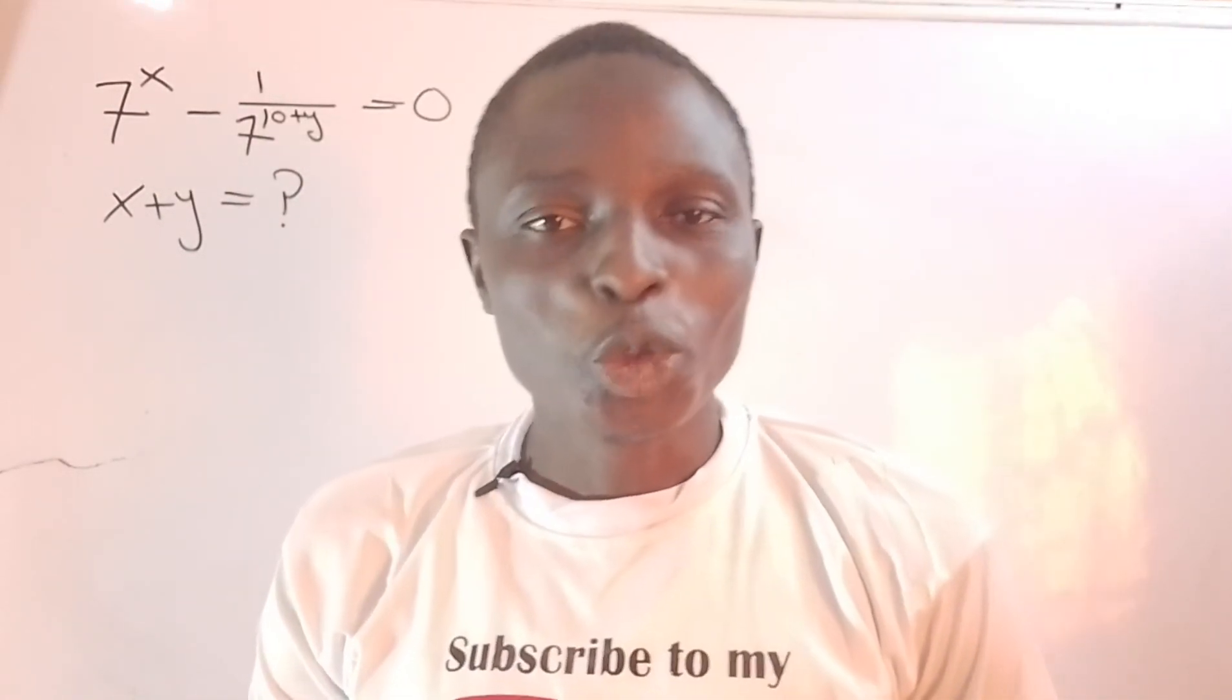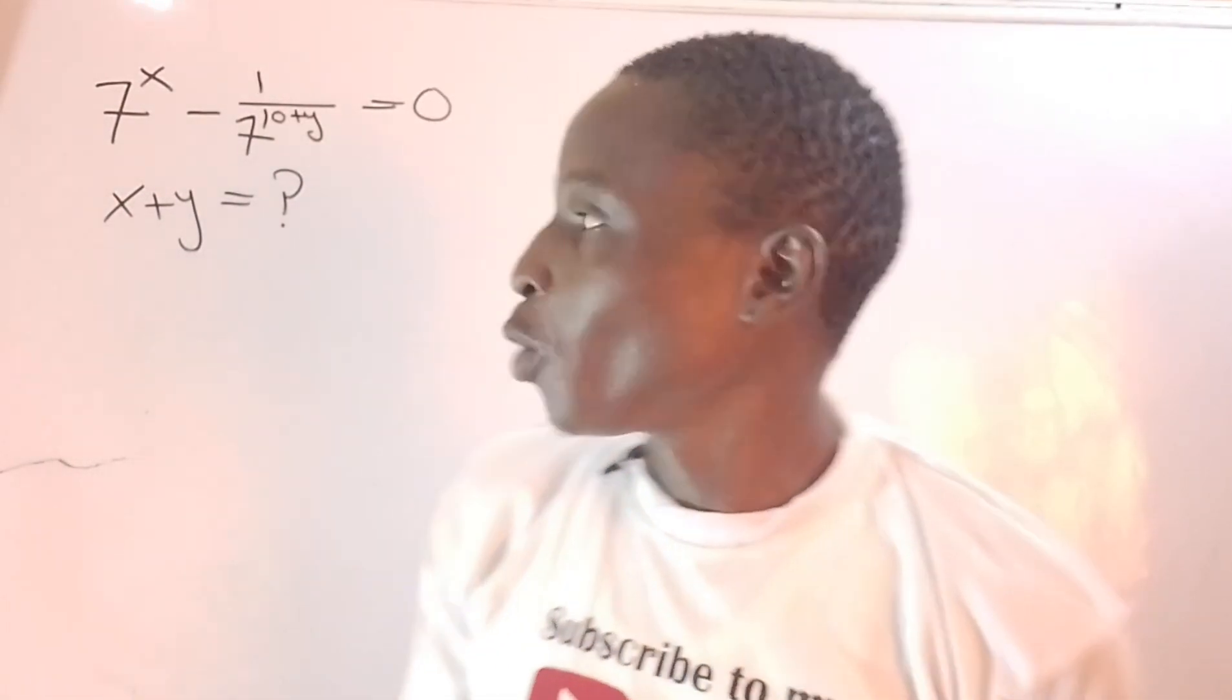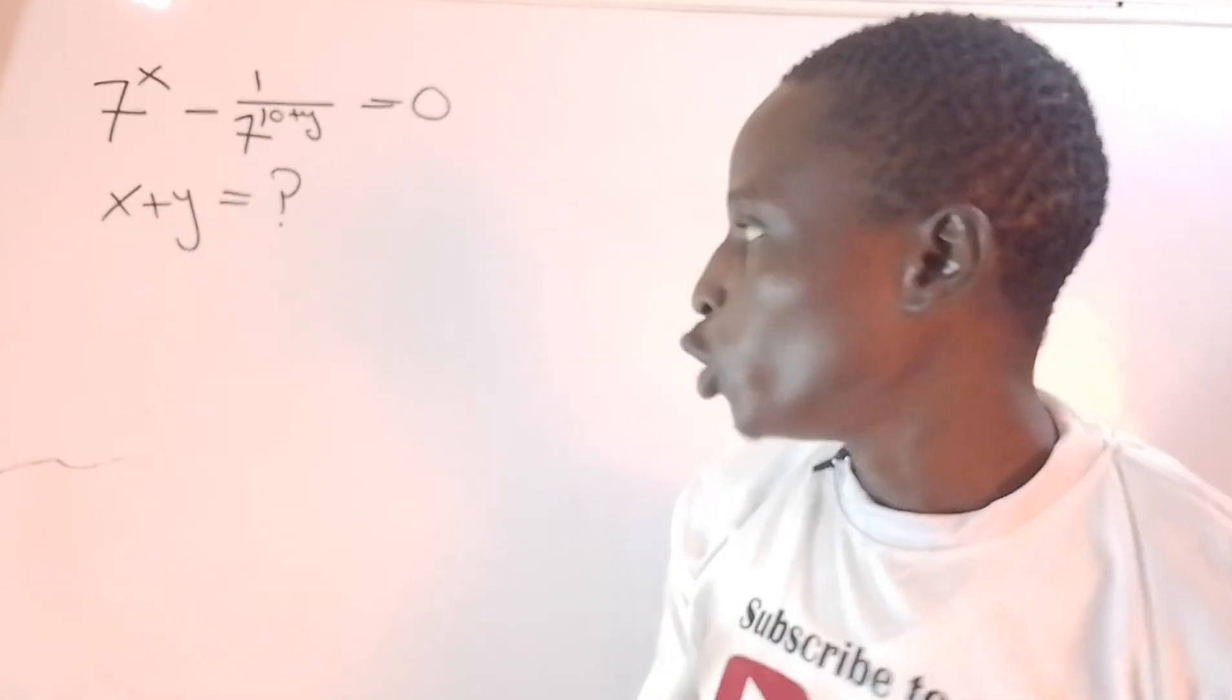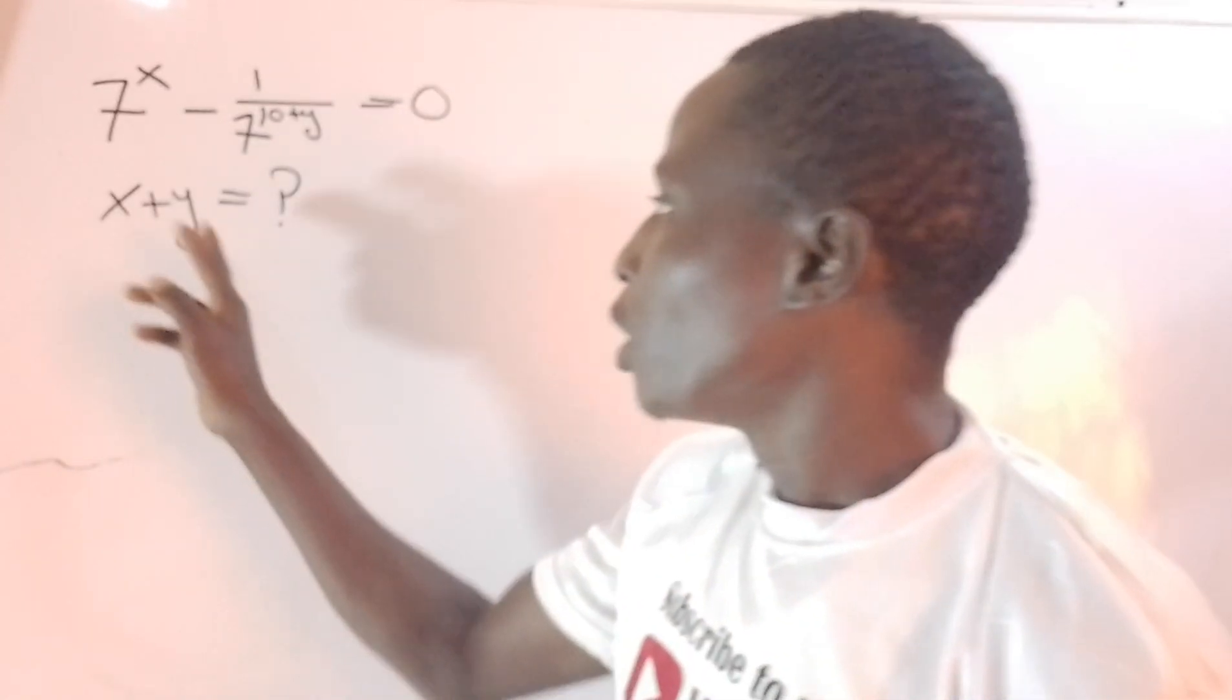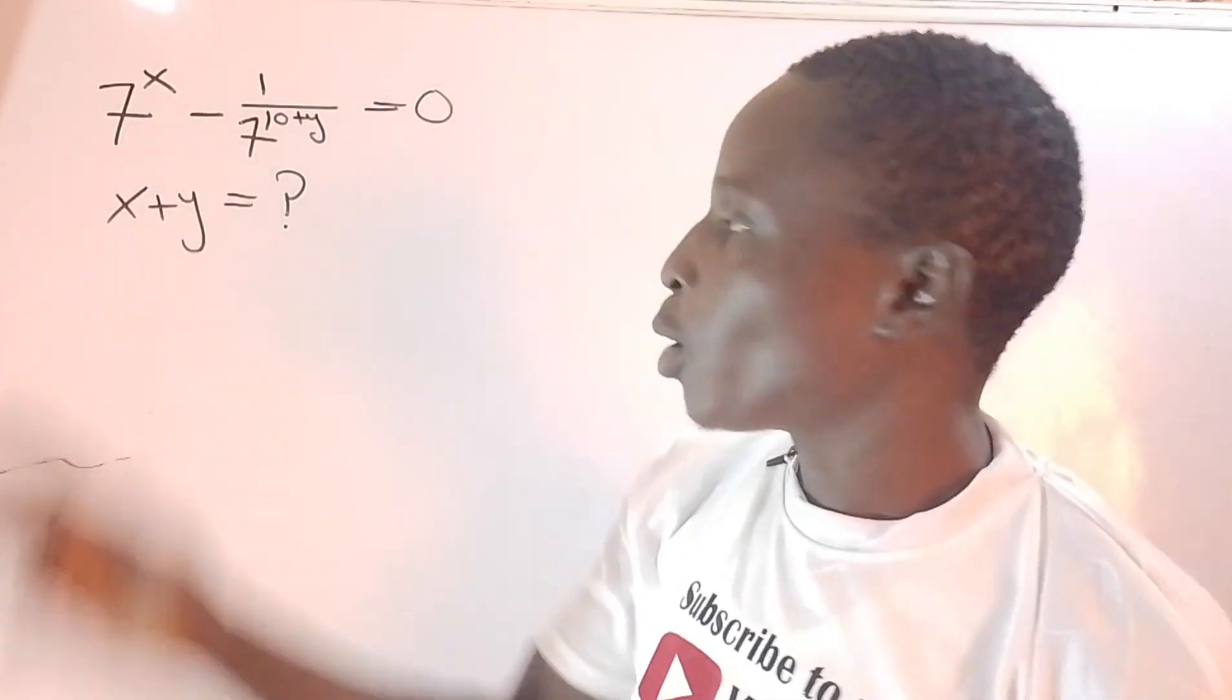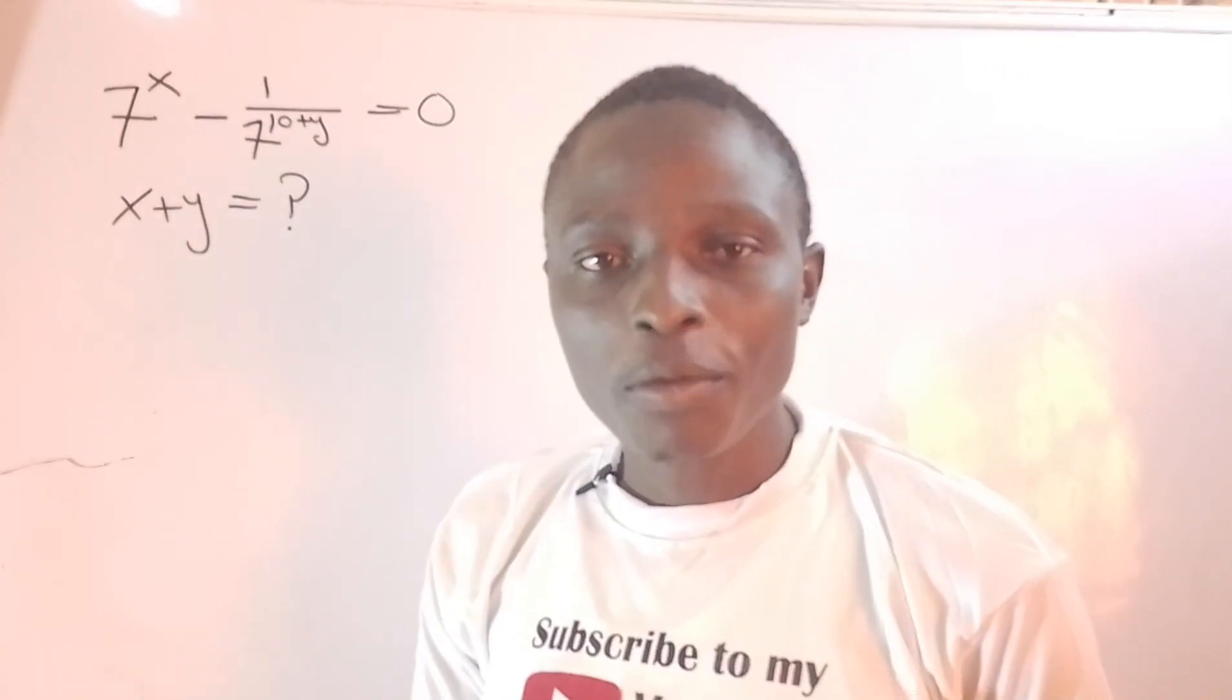Hello viewers and welcome once again to my YouTube channel. In today's class, we are going to provide a solution to x plus y in this particular equation: 7^x - 1/(7^(10+y)) = 0.